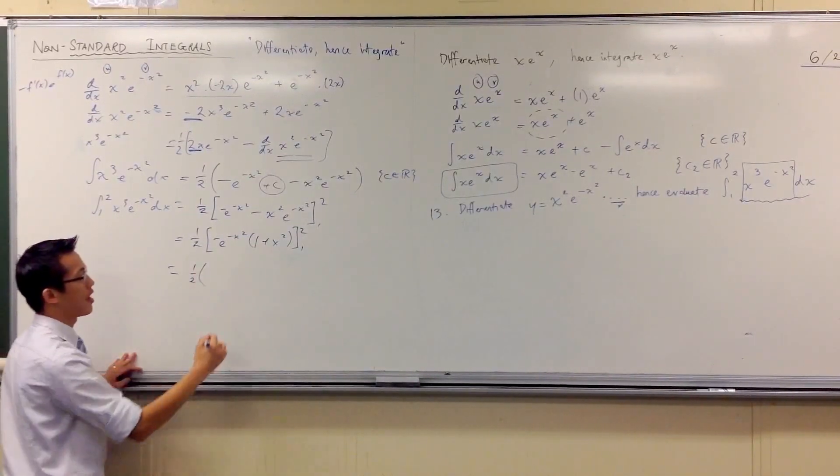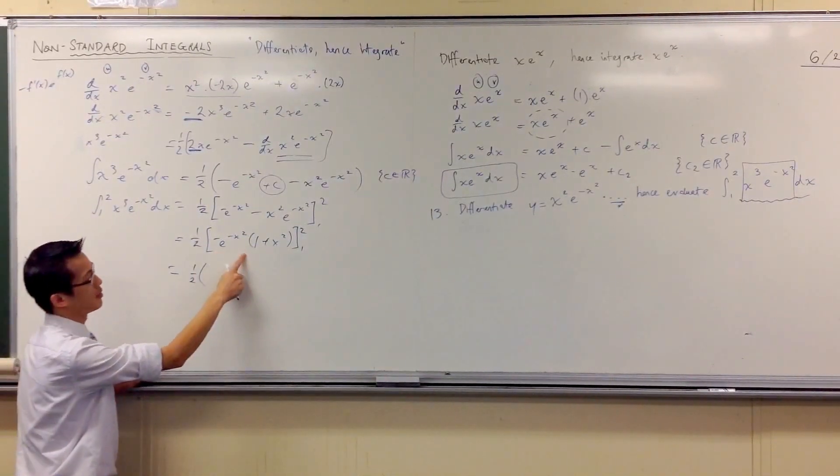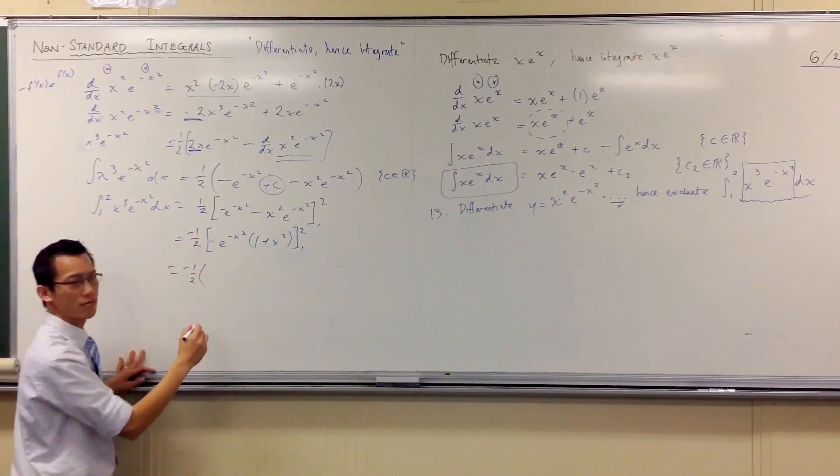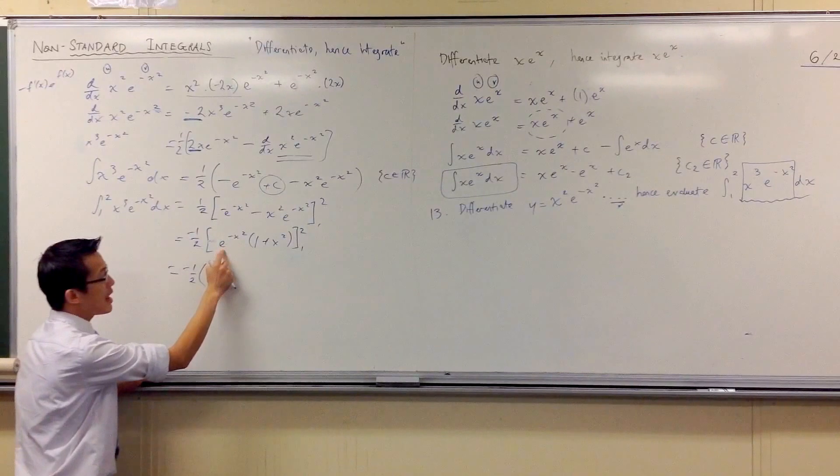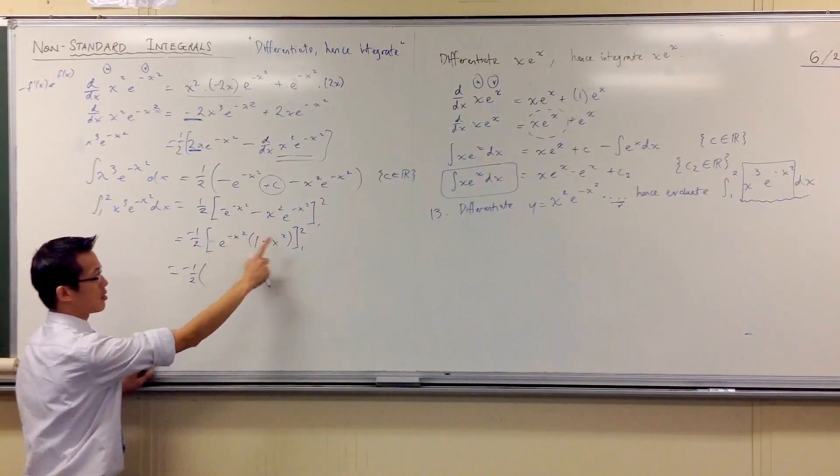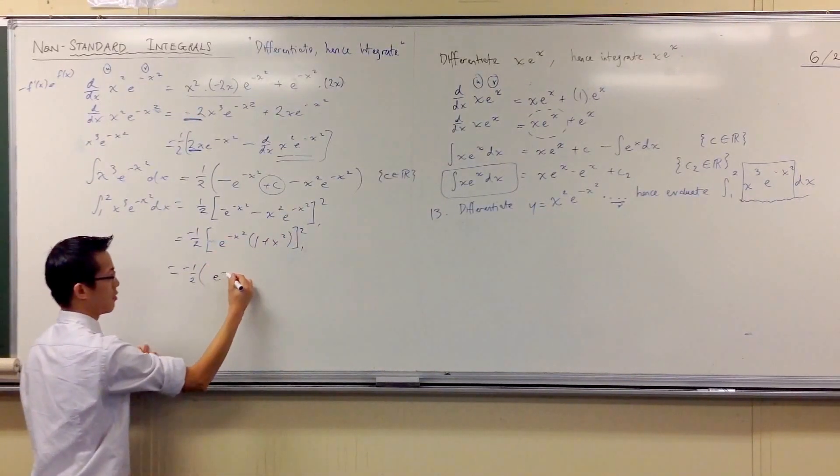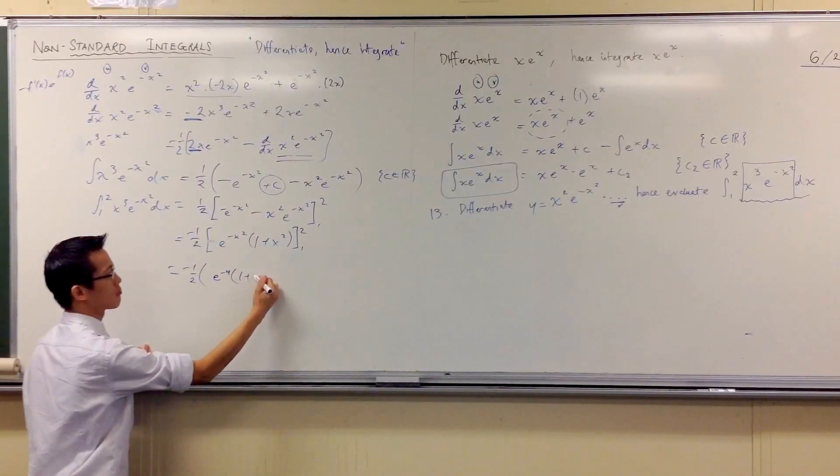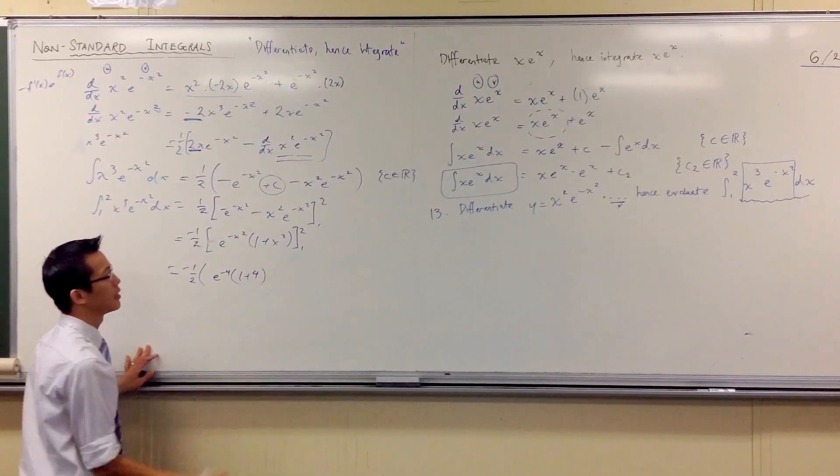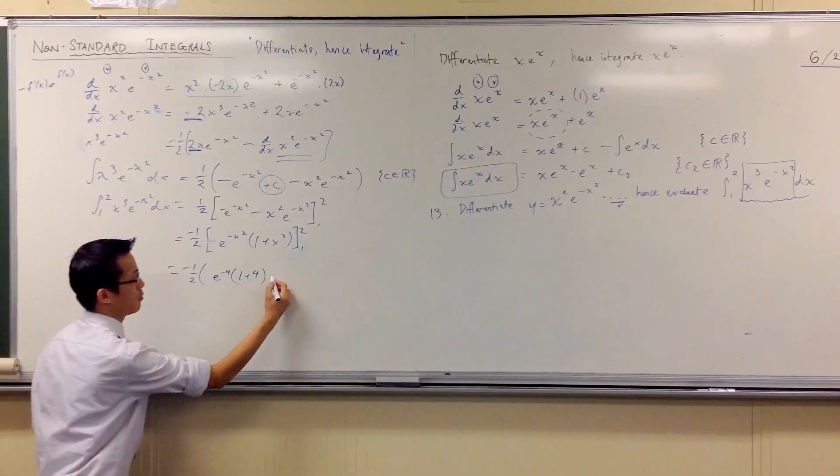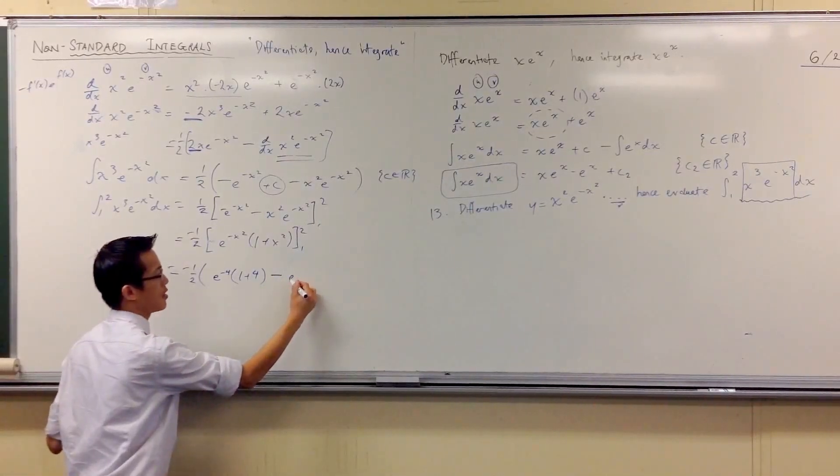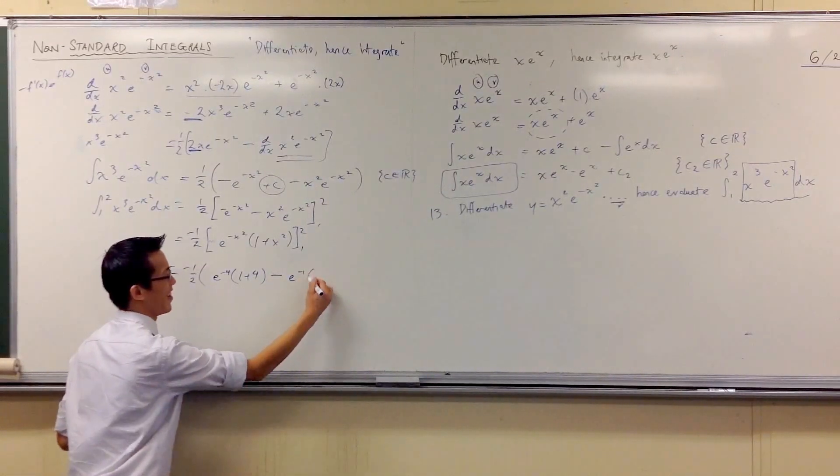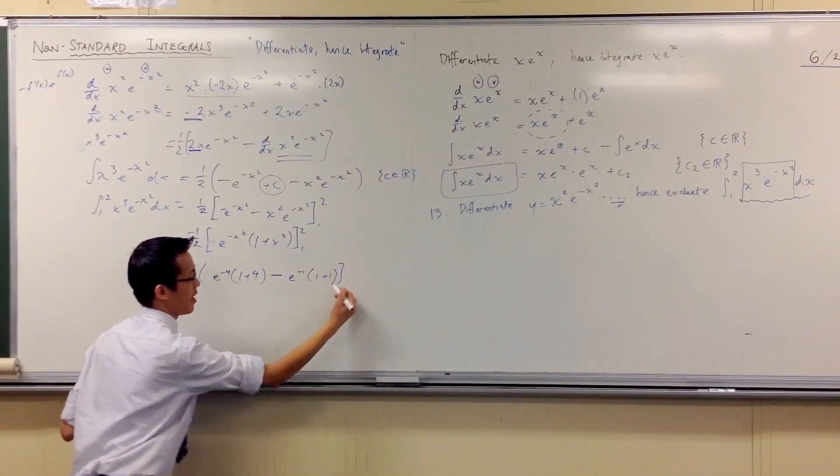A half times. What do you get here? Actually, I might as well, since that minus sign's there, I might carve it out the front. It's just a constant. e to the power of minus 4, then it's 1 plus 4. There's my upper bound. Now I'll do the lower bound. e to the minus 1, 1 plus 1, done.